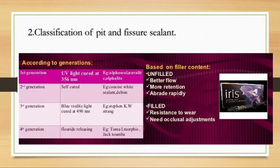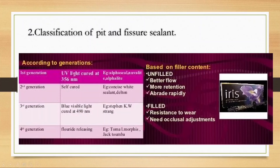Pit and fissure sealants is a very commonly asked topic. Pit and fissure refers to pits and fissures present on the occlusal surface. Pit and fissure sealants are applied on these areas. Classification of pit and fissure types: I, V, J, K. Sealant classification by generation: first (UV light), second (self-cure), third (blue light), fourth (fluoride releasing).